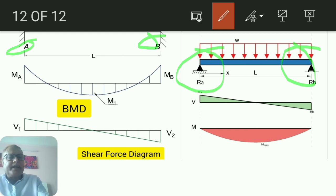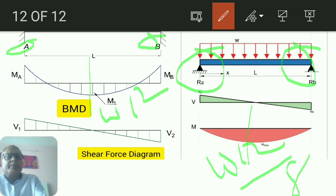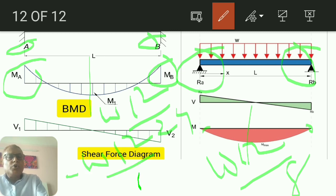And for bending moment diagram, simply supported beam has WL square by 8 at center, but the fixed beam has WL square by 24 at center. Simply supported beam has bending moment 0 at both edges, but in the fixed beam you will find that bending moment at A and bending moment at B will be minus WL square by 12.